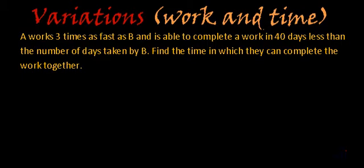So let's first read the statement. Statement says A works three times as fast as B and is able to complete a work in 40 days less than the number of days taken by B. Find the time in which they can complete the work together.